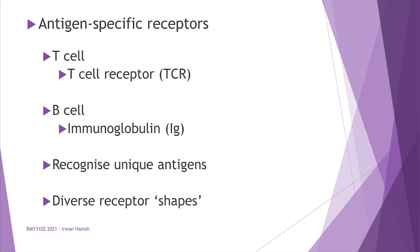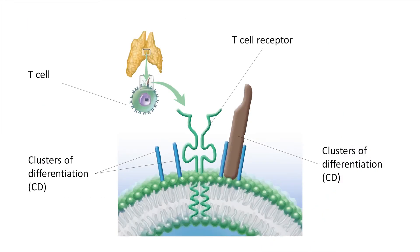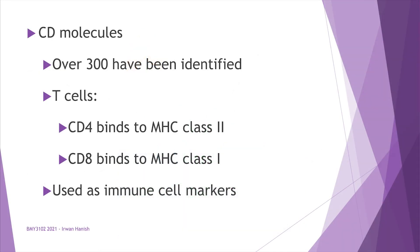These receptors have massive diversity in terms of shapes, and each shape will bind to a specific antigen shape. On the surface of a T cell, the T cell receptor has an antigen-binding site at its tip where antigens stick. In proximity to the TCR, you find CD receptors — the cluster of differentiation — named with numbers such as CD3, CD4, and CD8. There are hundreds identified so far.